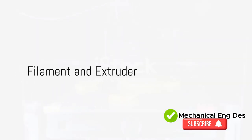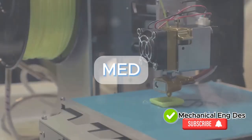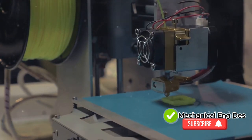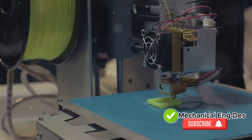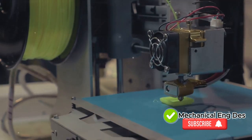Next, examine the filament and extruder. The filament should be loaded correctly and free of any tangles. The extruder, on the other hand, should be clear of any clogs or obstructions that could hinder the smooth flow of the filament.